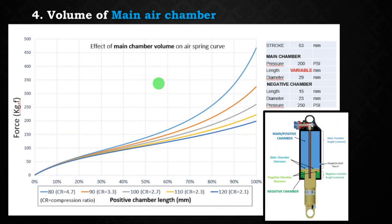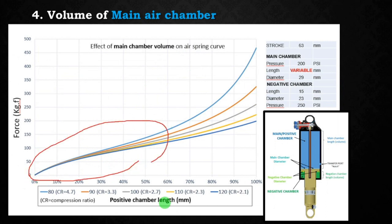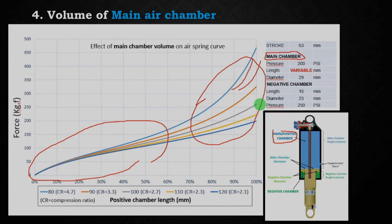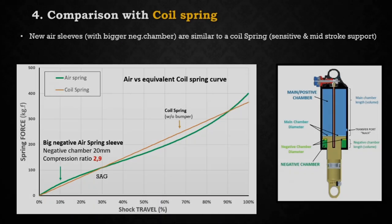The negative air chamber influences the first half of the travel. As you probably already know, by changing the volume of the main chamber you control the final ramp-up of the shock. Decreasing the volume of the main chamber gives a much higher ramp-up at the end of the travel — but you already know this.